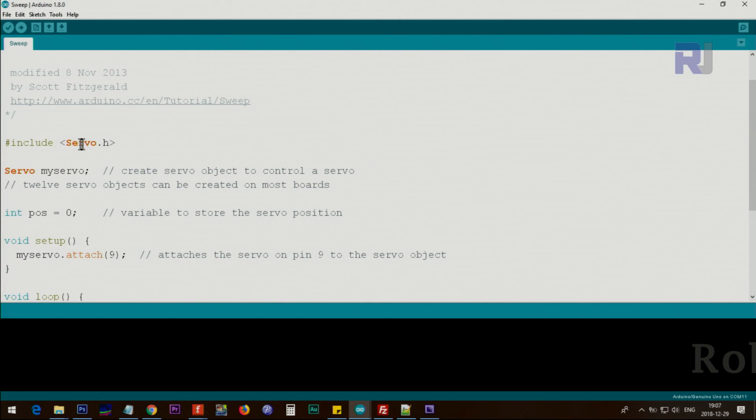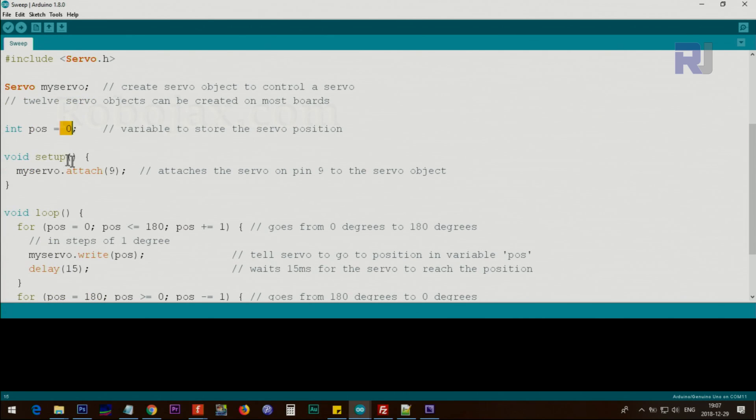Including the servo.h header file, and this is used to control the servo. Then you put the name of the header file. This is a class and this is you're creating an instance of the class, and here it's called myservo. The next line, integer pos, that's a position, that's a variable that's holding the position and initial position is zero.